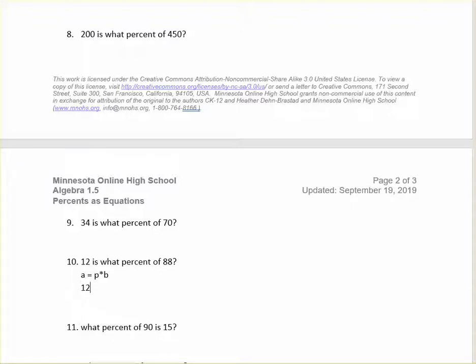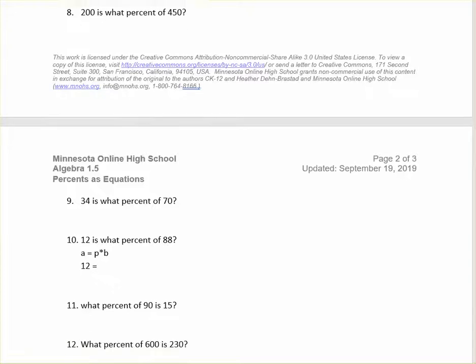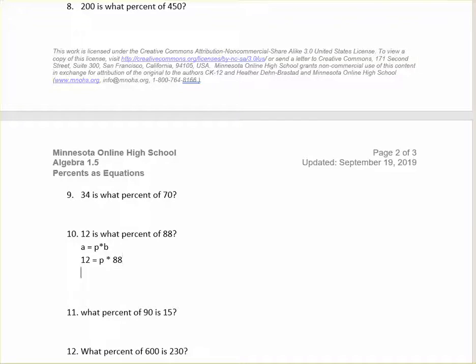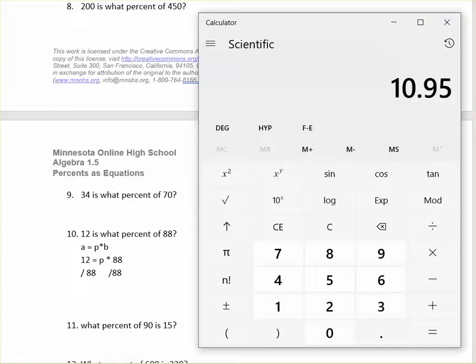So the part is 12. Is means equal sign. So I'm just translating directly from the equation. 12 is, 12 equals what percent. We don't know, so we'll put p for what percent. And then we see the word of, which means to multiply. And then we have the whole, which is 88. So this equation is a little bit different. We have to solve for p. So I need to divide both sides by 88 so that I can get p by itself.